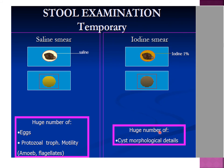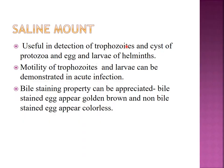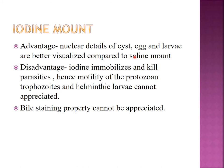Iodine smear is helpful for morphological details of various cysts of parasites. Saline mount is useful for finding trophozoites, cysts of protozoa, and eggs of helminths, and motility of trophozoites or larvae is better seen in saline mount. In iodine mount, nuclear details of cysts, eggs, and larvae become clear. However, the disadvantage of iodine mount is that it immobilizes and kills the parasite, so motility of trophozoites cannot be appreciated. Bile-stained properties of some eggs also cannot be appreciated in iodine mount.